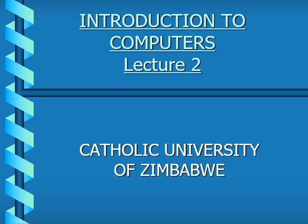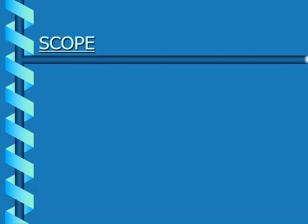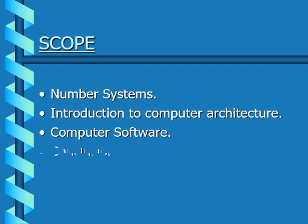Welcome to our second chapter, which is about number systems and computer architecture. For those who've just joined, my name is Mr. Quendessa. The objectives of this chapter are to introduce you to the concepts of number systems in computers, to give you an insight into computer software, and to introduce you to basic computer architecture. The scope of today is number systems, introduction to computer architecture, and computer software.